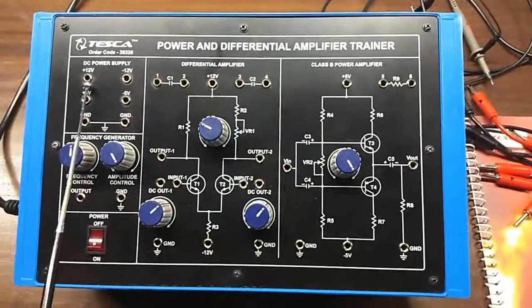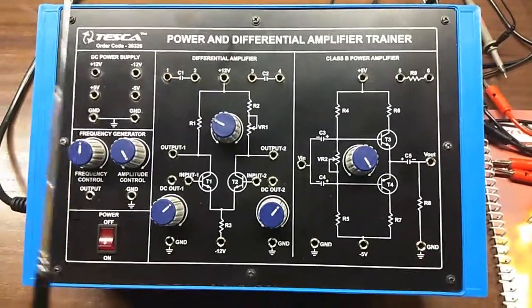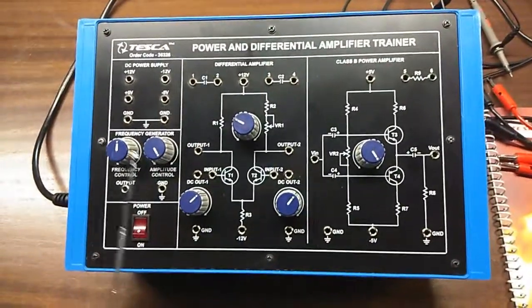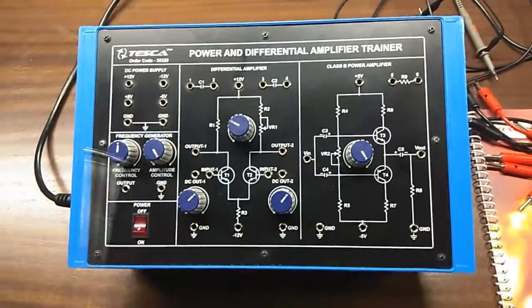This is DC power supply: plus 12 volt, minus 12 volt, and plus 5 volt, minus 5 volt. This is the frequency generator, this is the frequency control knob and this is the amplitude control knob. This is built in.